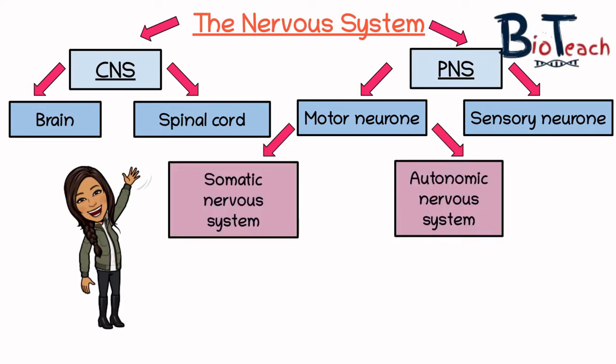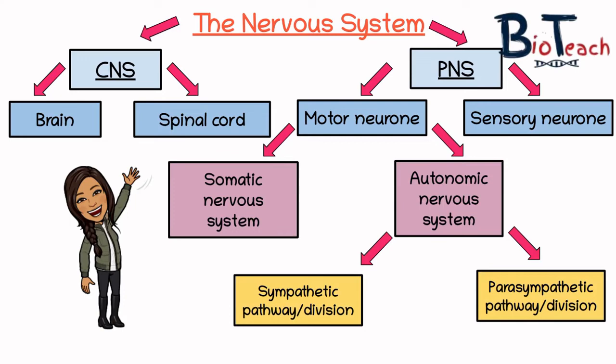The PNS is further split into the somatic and the autonomic nervous system. The somatic nervous system controls voluntary movements — for example, deciding to pick up a water bottle, where your brain instructs your muscles to contract. The autonomic nervous system controls involuntary movements, such as our heart beating or ventilatory regulation. The autonomic nervous system is further divided into the sympathetic pathway and the parasympathetic pathway.